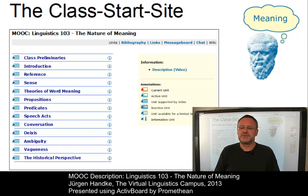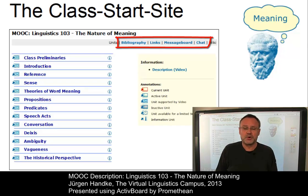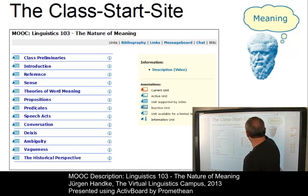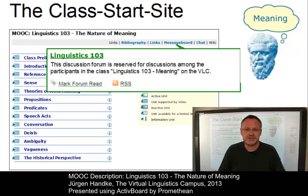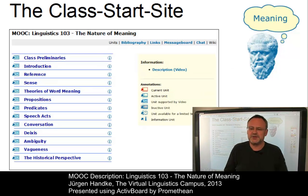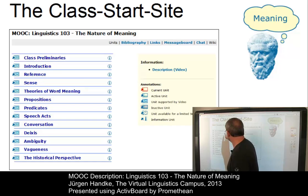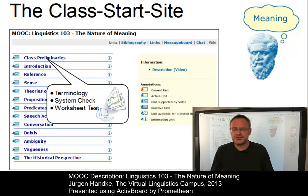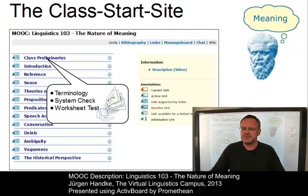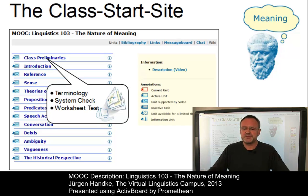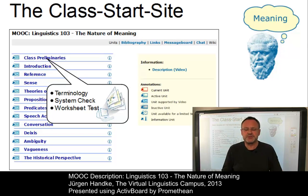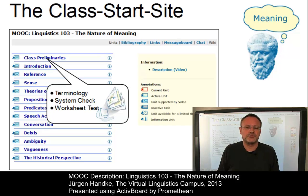On the class start site, you have access to several class-related links. One of them, for example, is a hyperlink that leads you to the class-related forum where you can discuss questions with your classmates. The core of the class are the e-learning units, where the first one — the class preliminaries — informs you about some general aspects of the class, provides helpful routines to find out whether your computer is configured correctly, and makes further suggestions about how to study online. We recommend going through the class preliminaries very carefully, especially if you are a first-time user of a class on the Virtual Linguistics Campus.